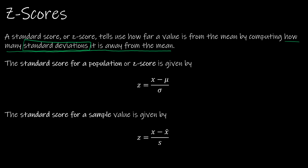The z-score for a population and for a sample is essentially determined in the same way. Remember that when we're dealing with a population, all of the parameters — because population goes with parameter — are always going to be Greek letters. That's why we have mu and sigma for the population parameters: mu is the population mean and sigma is the population standard deviation.